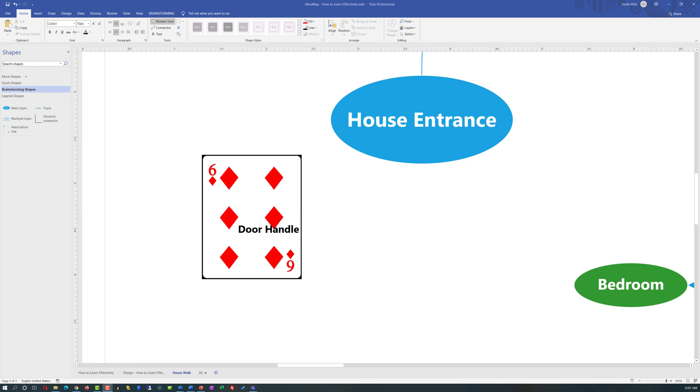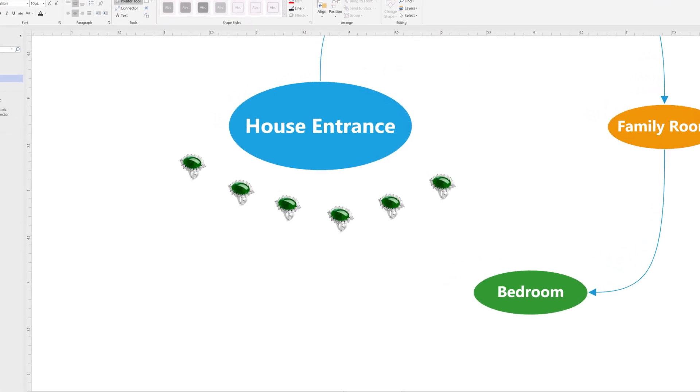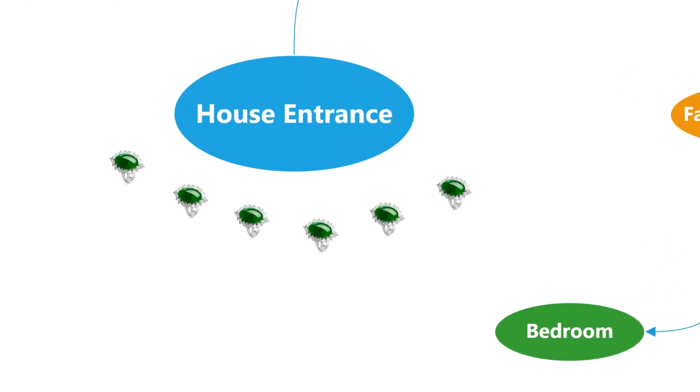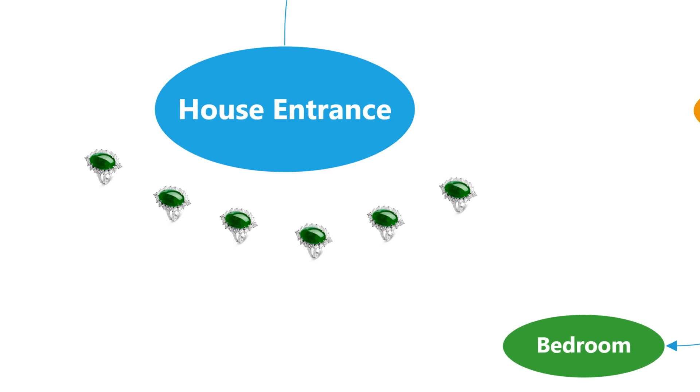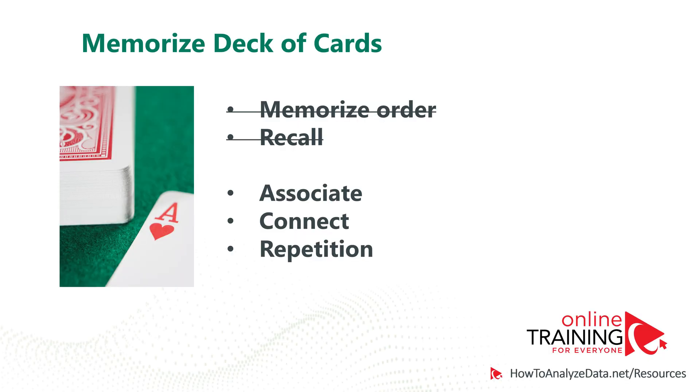For example, can you imagine your entire front door as six of diamonds with the door handle right where it should be? Or can you imagine the door with six diamond rings hanging right in front of you? The more weird and the more unusual it is, the better chances you have for your brain to remember it.